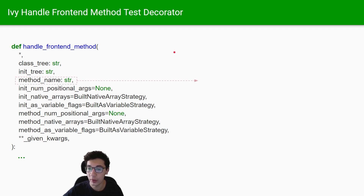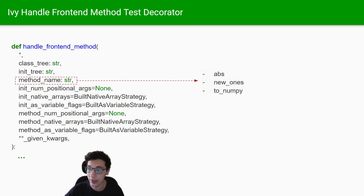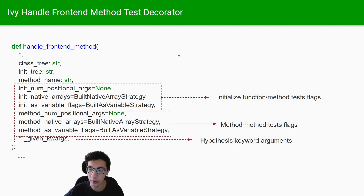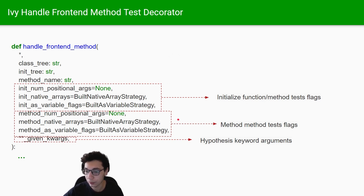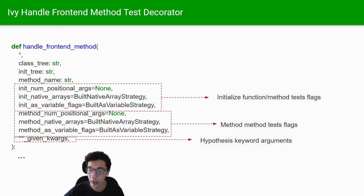For the third argument, obviously the method_name - this is the method we are trying to test. It could be as simple as the abs method or something more complex. All the other arguments may already be familiar: the first three arguments here are specific to the initialize function, and the next set of three arguments are specific to the method test flags. The given_keywords here is similar to the previous decorator as keyword arguments for the hypothesis given decorator.